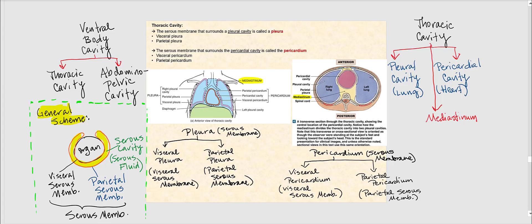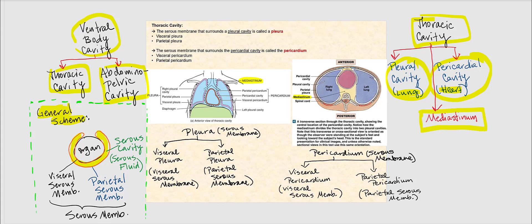The ventral body cavity is broken down into the thoracic cavity and the abdominal pelvic cavity. Within the thoracic cavity, we find the pleural cavity that surrounds the lung and the pericardial cavity that surrounds the heart. We also have a central region within the thoracic cavity referred to as the mediastinum.